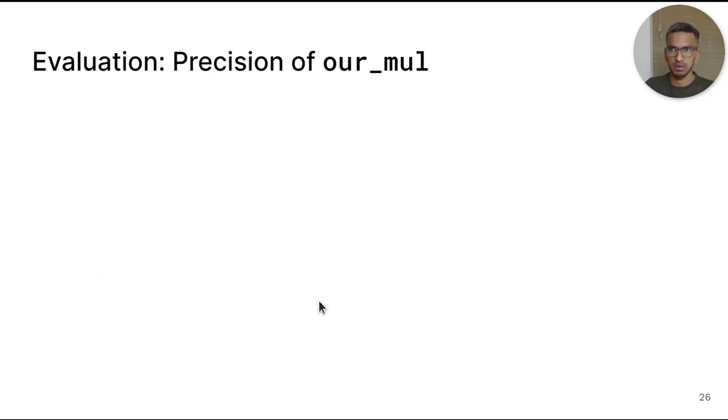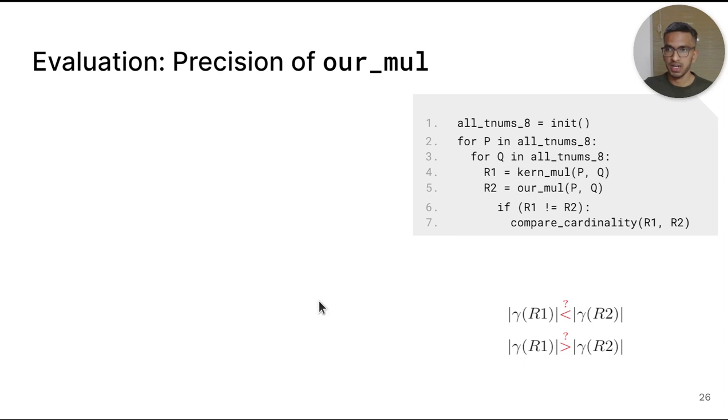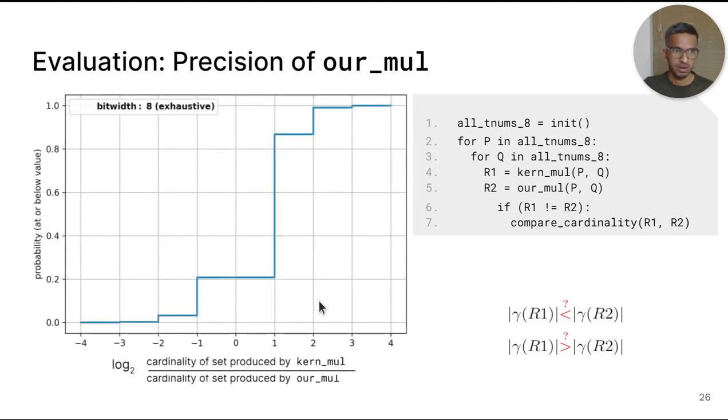Next, we evaluate the precision of our algorithm. It doesn't make sense to evaluate the precision on randomly sampled TNUM inputs and generating all pairs of TNUMs of width 64 is infeasible. Hence, we enumerate all possible TNUM pairs of width 8 and multiply them using both the algorithms. It turns out that for around 99% of the input TNUM pairs, Kernel produces the same output as our_mul. We consider only the remaining cases for the plot. This is still a large number of TNUMs. To measure precision, we compare the cardinalities of the sets produced by the result of the multiplication. If the set is smaller, then the algorithm produced a more precise TNUM. We again plot a CDF.